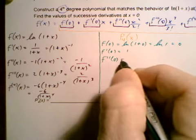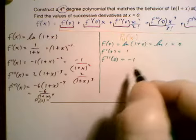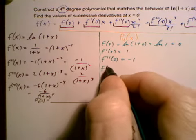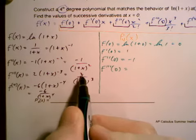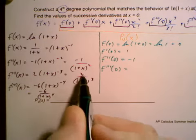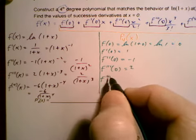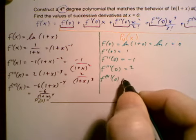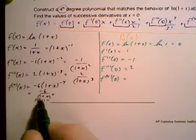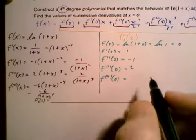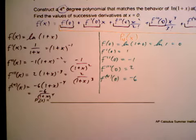f double prime at 0. Well, f double prime at 0 is negative 1 over 1, so that's negative 1. f triple prime at 0, just got to be careful here. f triple prime at 0 is 2 over 1 plus 0 cubed. So 2 over 1 cubed, which is 2. And f fourth derivative, I should say, fourth derivative of f at 0 would be negative 6, right? Negative 6 over 1 plus 0 to the fourth, so negative 6. So I have all of the coefficients I need.